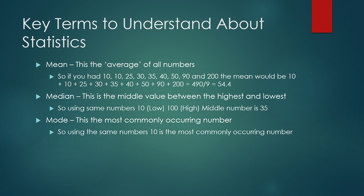The median is the middle value — the value between the highest and lowest. Put those numbers in order from lowest (10) to highest (200) and count forward: 1, 2, 3, 4 gets you to 30, and back from 200: 1, 2, 3, 4 gets you to 40. The middle number between those two — 4 up, 4 down, because there are 9 entries — is 35. That middle number is your median.